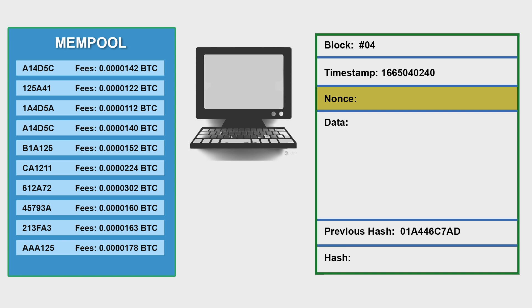If you look at the mempool here, we have transactions and lots of other information. Among them, the important one for now is the transaction fee. These are the transaction fees the miner will receive if he adds that transaction. Transaction fees are non-compulsory and are specified by the person performing the transaction so that their transaction gets processed earlier.